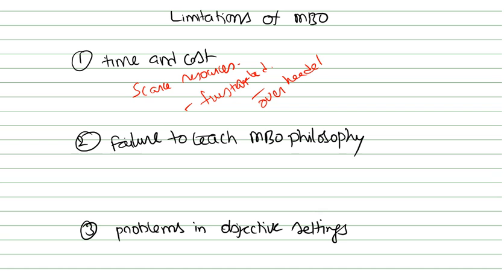People feel overburdened because you cannot always think from one perspective — decisions cannot be based on only one side. If salaries are pending for two months and employees are still burdened with more responsibilities, they will definitely get frustrated — this becomes exploitation. Another limitation is the failure to teach MBO philosophy. Since MBO is a new innovation, people may not accept it and it may not be perfectly implemented or standardized, leading to chances of failure.